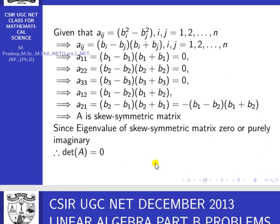With n equal to 3, aij equals bi minus bj times bi plus bj. What is a11? Replace i equal to 1, j equal to 1: that means b1 minus b1 times b1 plus b1. Since b1 minus b1 is 0, the value of a11 is 0. Similarly, a22 equals b2 minus b2 times b2 plus b2, so a22 is also 0. The value of a33 is also 0.